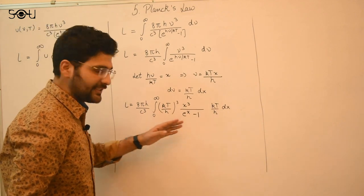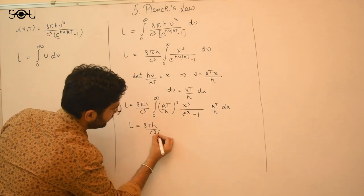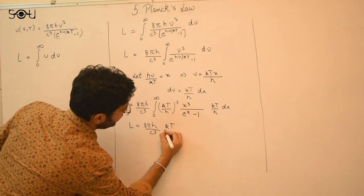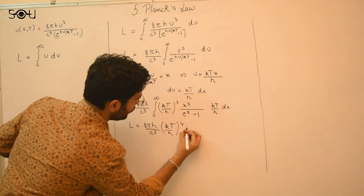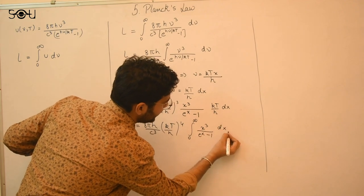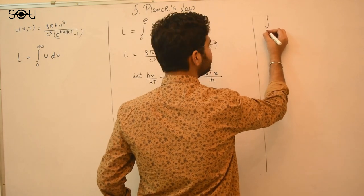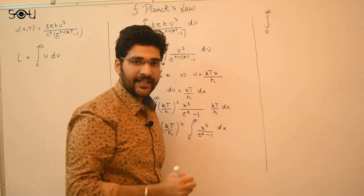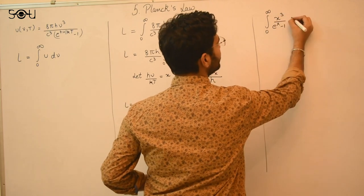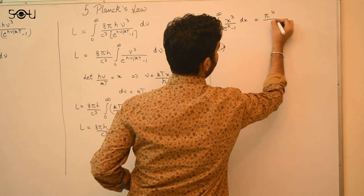Taking the remaining constants out of the integral: 8πh over c³ times (kT/h)³ times kT/h gives (kT/h)⁴. The integral becomes the standard integral from 0 to infinity of x³/(e^x − 1) dx, which has the known value π⁴/15.